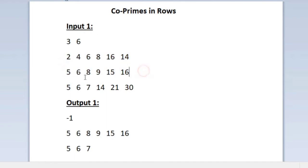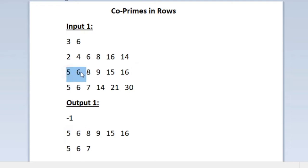Now we move to the second row. The first pair of integers is 5 and 6. The HCF for 5 and 6 is 1 — no integer other than 1 can divide both. So 5 and 6 are co-prime, and we print both. Moving to the next pair, 6 is already identified as co-prime, so 8 can be paired with either 6 or 9.